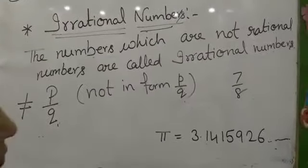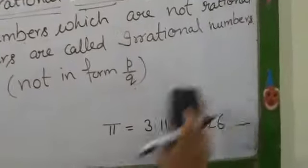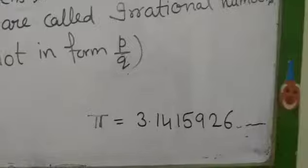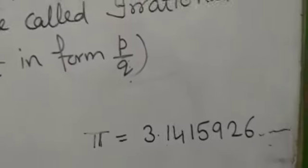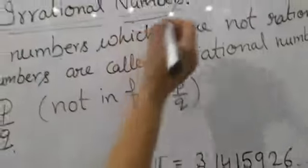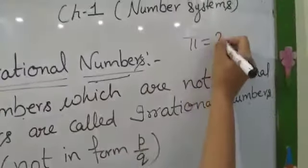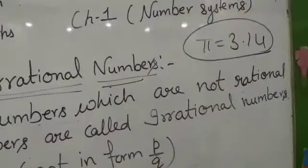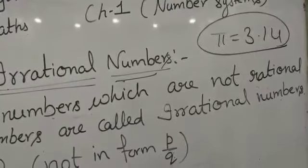For example, I would like to take an example: Pi. You have already read that. What is the value of Pi? Pi's value is 3.14. We learned it in the 8th class.